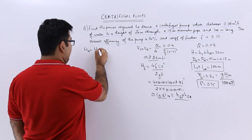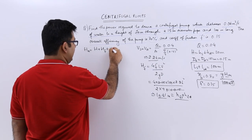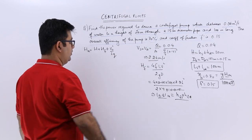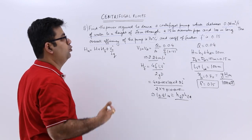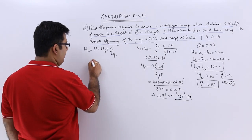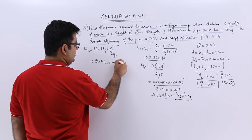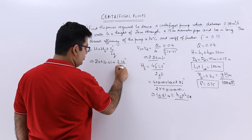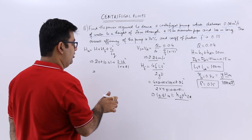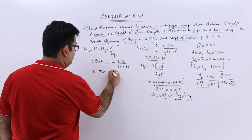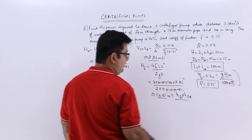The manometric head formula is the total static head (20 meters) plus the friction head loss plus the velocity head. So H_M = 20 + 10.41 + (2.26² / (2 × 9.81)). This is the total head against which the pump has to lift water, giving a manometric head of approximately 30.67 meters.